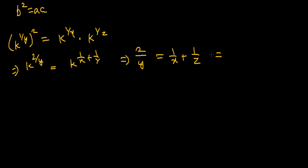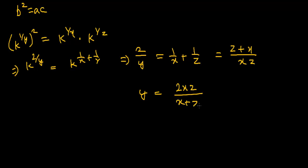Solving this, we get 2/y equals (x + z)/(xz), so y equals 2xz/(x + z). This is the harmonic mean formula, so we can say that x, y, z are in HP. The first question is proved.